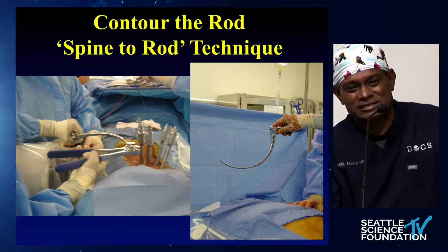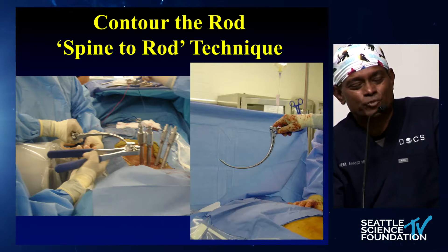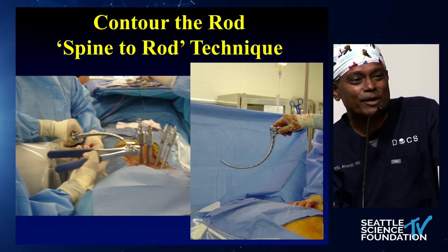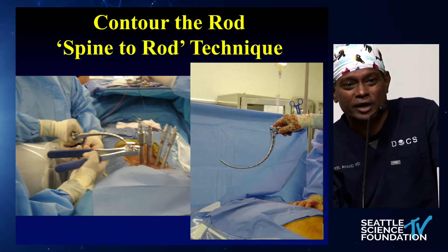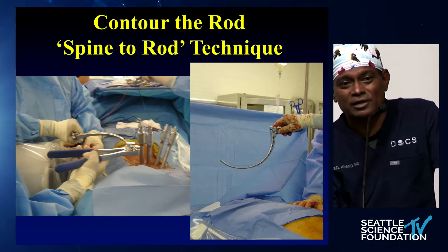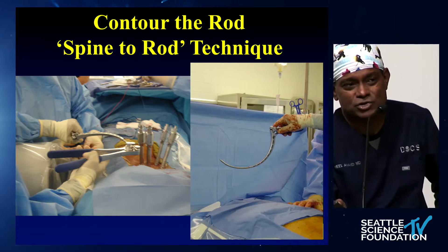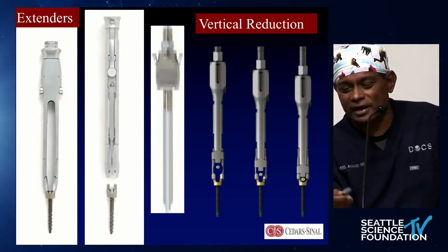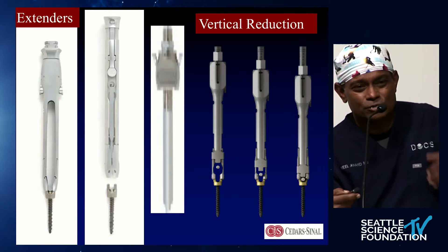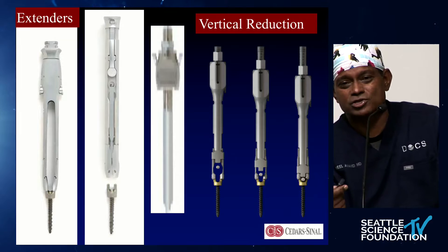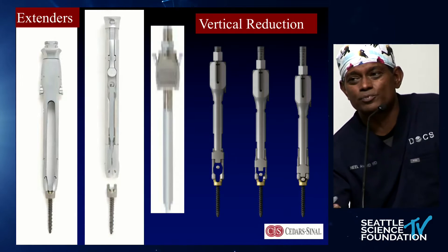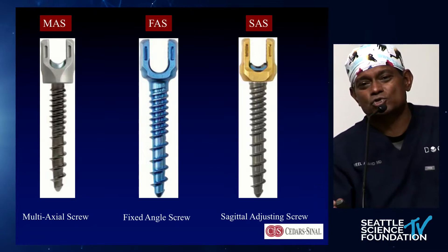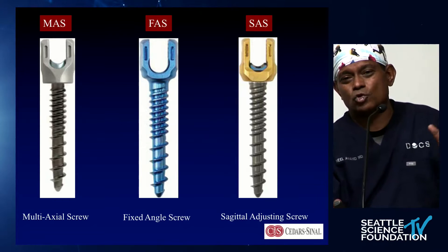Contouring the rod is the key in any MIS technique. You're pulling the spine to the rod, and it will come wherever you put it. So it becomes critical that you contour the rod right to rotate, translate, and realign that fractured spine. Reduction towers become very useful — everyone has them — and you can achieve great magnitudes of reduction with these towers done percutaneously.